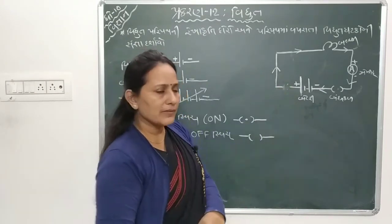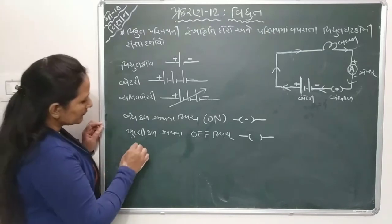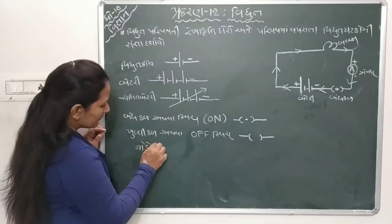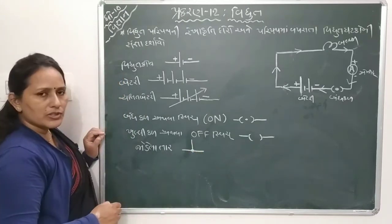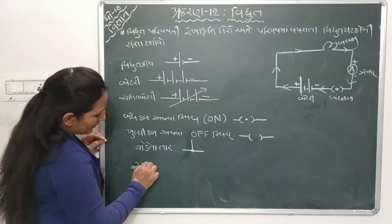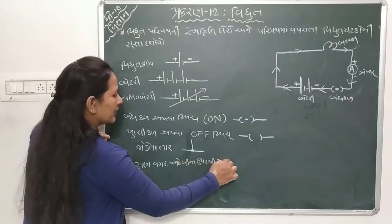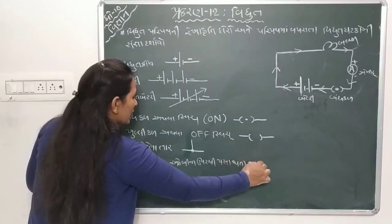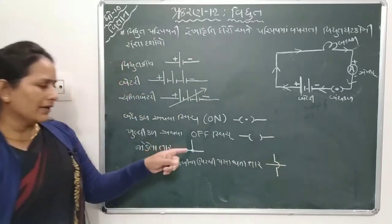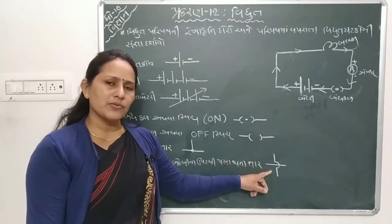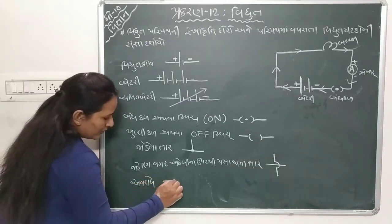Ek babadh ma rakho: tir kyare darshavo chho - kal band hoy tyare. Pachhi jodaana taar - jodela taar no sanketa mujab thaay ke taar ino ahiya joint karelo chhe, jodela taar chhe. Pachhi jodaan vagar ek bija upar thi pasar thata taar - jodela nathi, joint nathi karela, parantu ek bija upar thi khali pasar thay chhe.